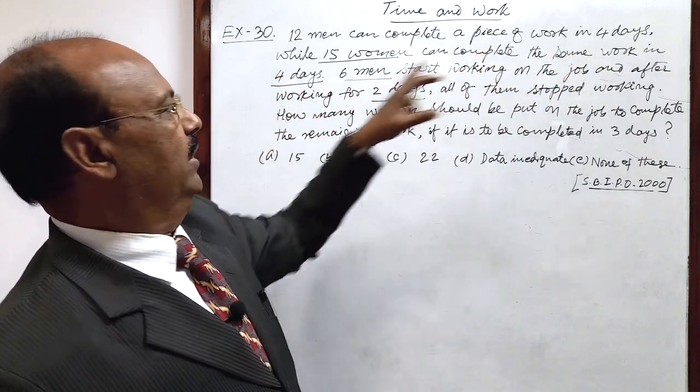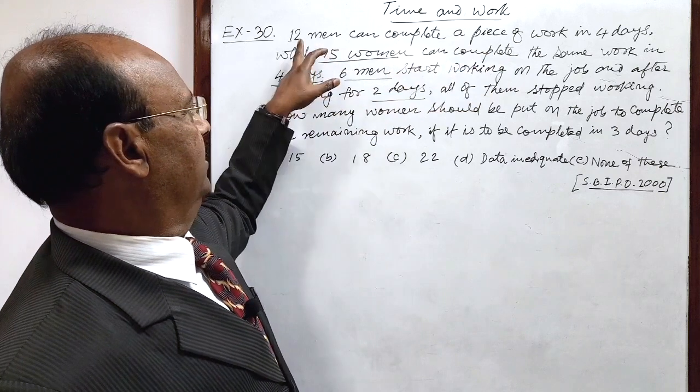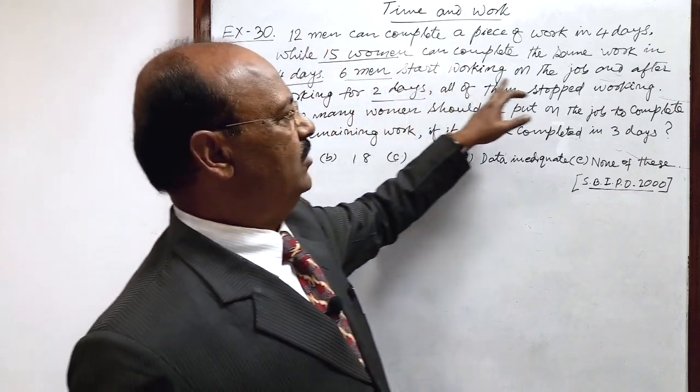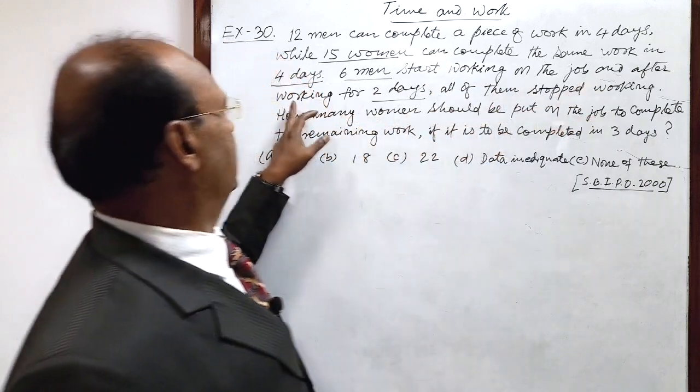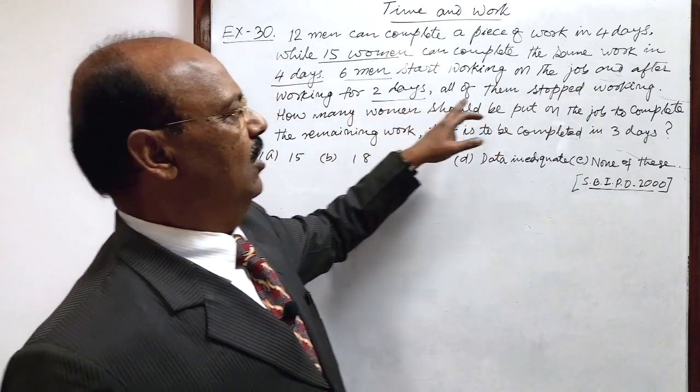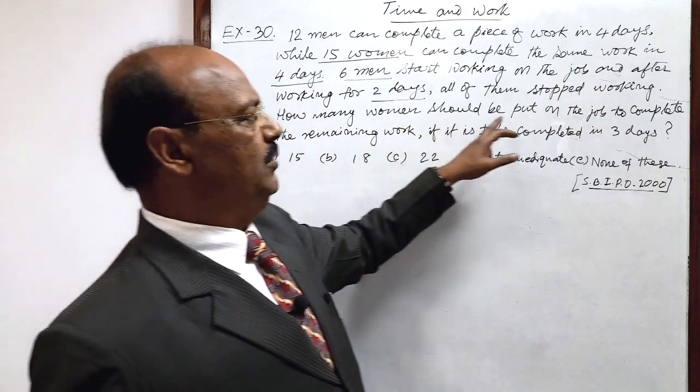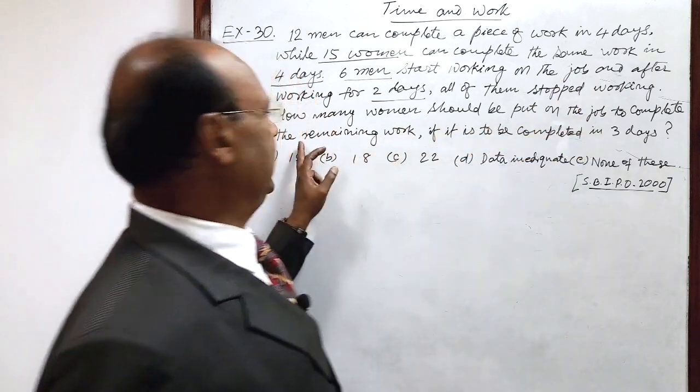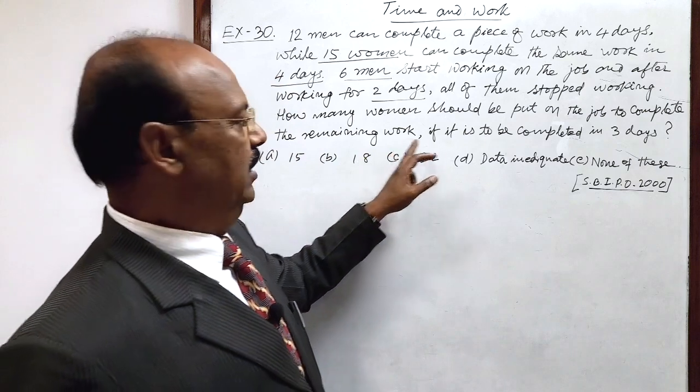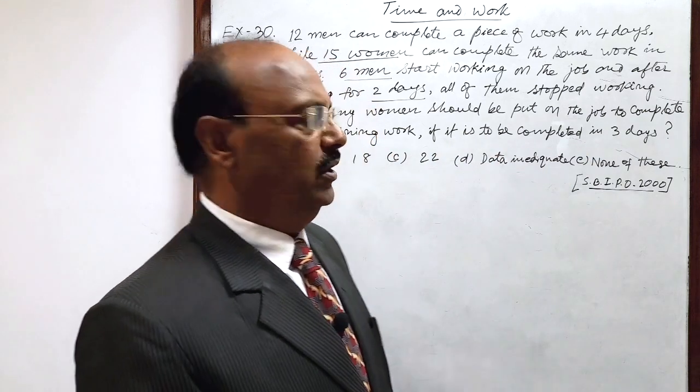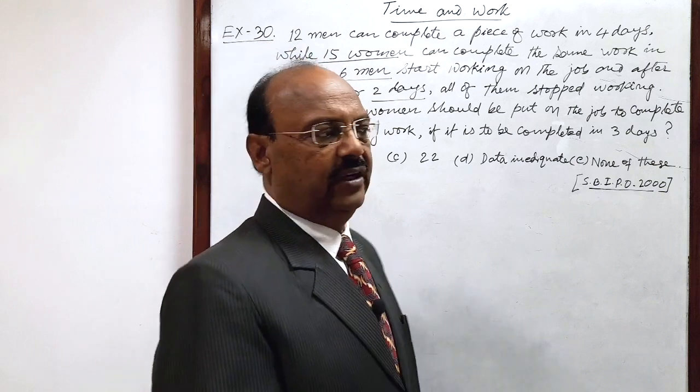The number of days is the same, but the number of persons is different—12 men here and 15 women here. 6 men start working on the job, and after working for 2 days, all of them stopped working. How many women should be put on the job to complete the remaining work if it is to be completed in 3 days? Interesting question, let us see the solution.